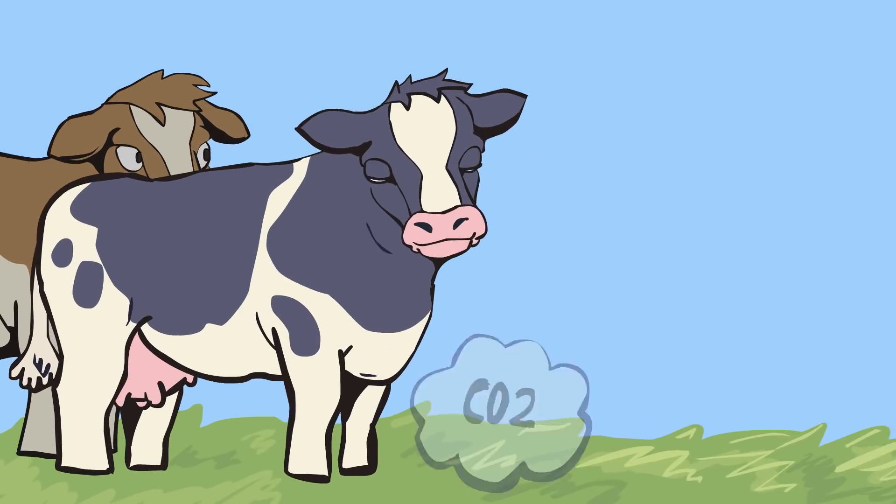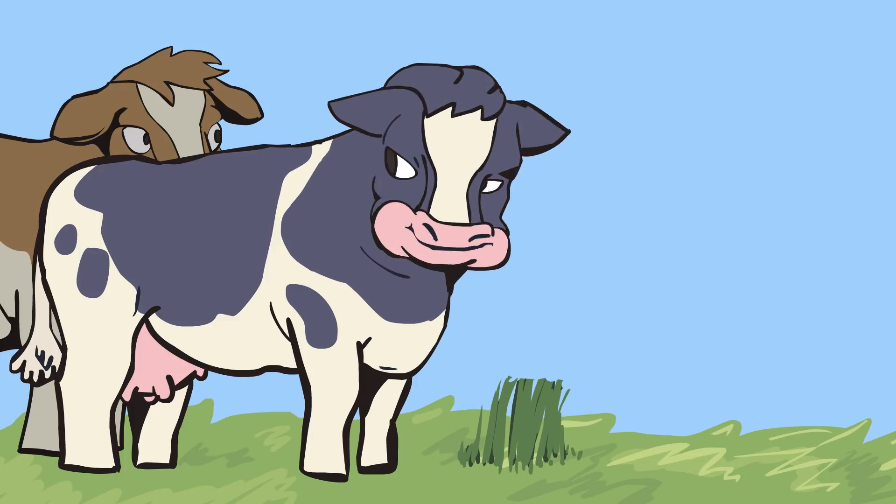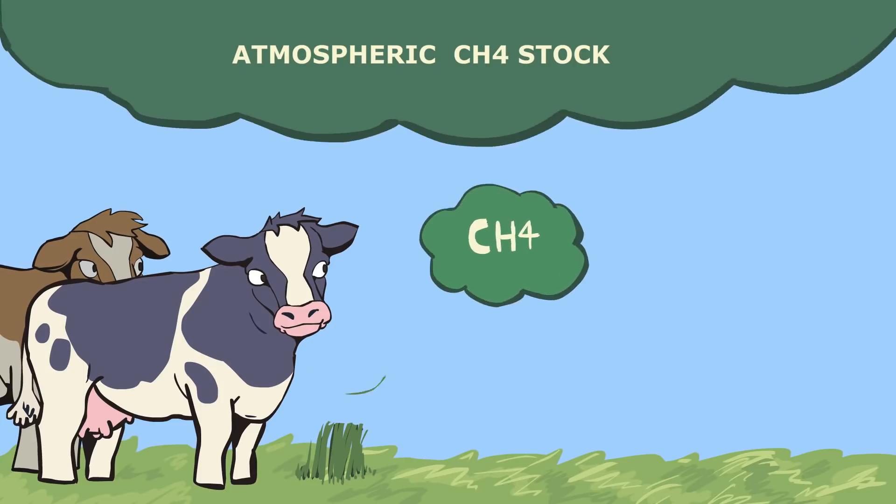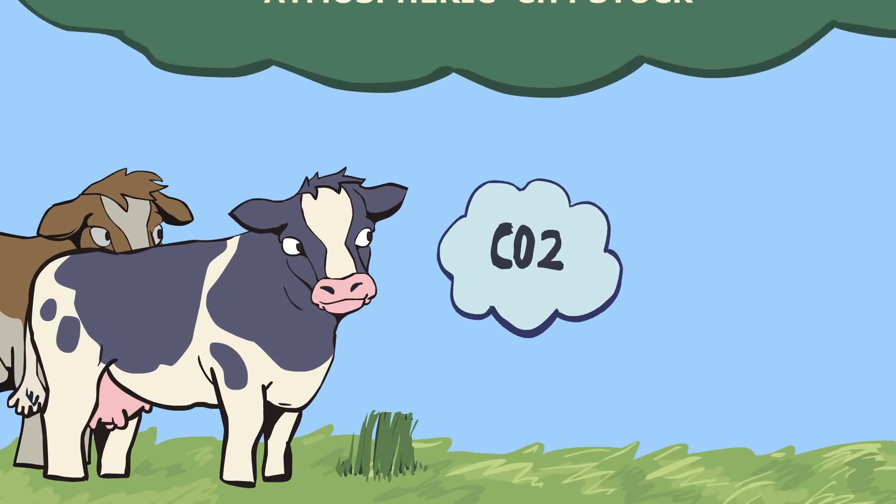CO2 grows the grass. The cow eats the grass. The cow belches methane. Methane oxidizes to CO2. And CO2 grows the grass.